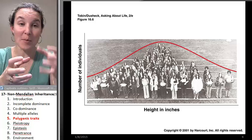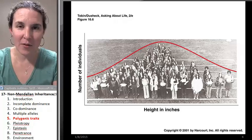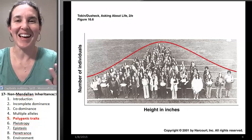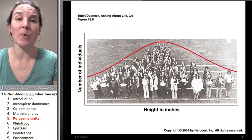So some phenotypes are yes or no. Pink, white flowers versus purple flowers in our pea plants. That's an example of something that's really straightforward and simple.